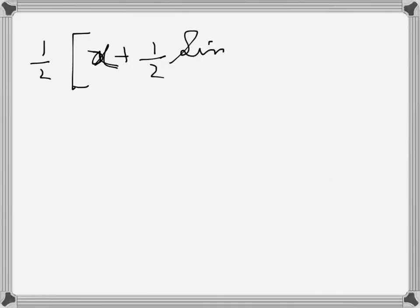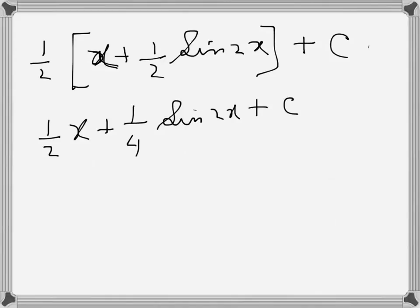And then of course C. I can write the C outside the bracket because it's the same, another constant. So this is ½(x + ¼sin 2x) + C. So that's the result of the integration.